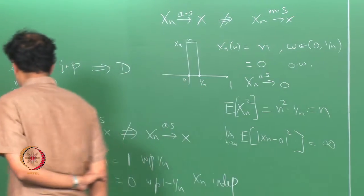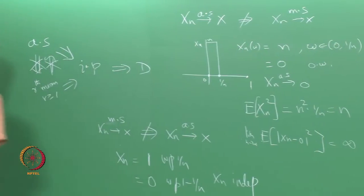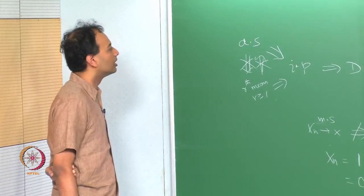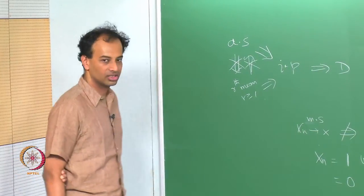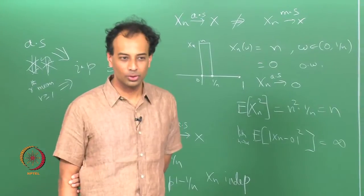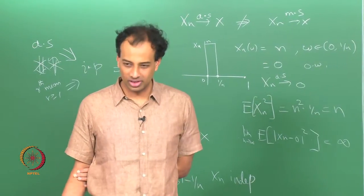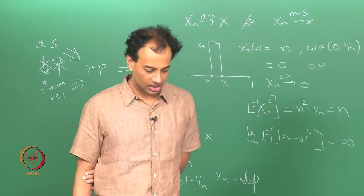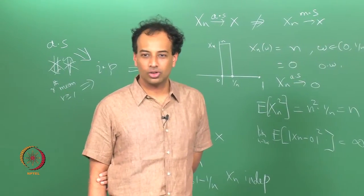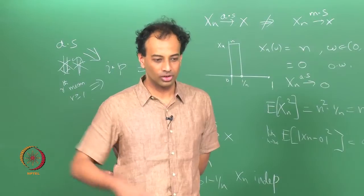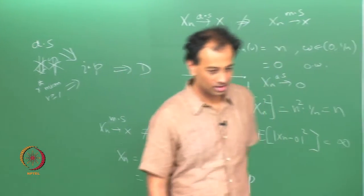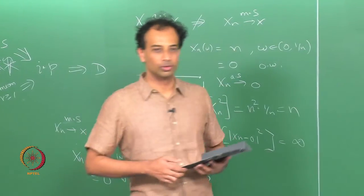Now we will look at a few other convergence results which I will state without proof. They are useful for what we are going to study about the law of large numbers and so on. The proofs in some cases may be somewhat long and technical, so I am just going to state the theorems so that you are aware of the results, and you can consult more advanced textbooks if you want to read the proofs.